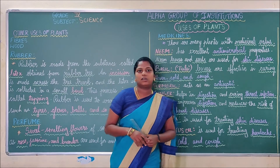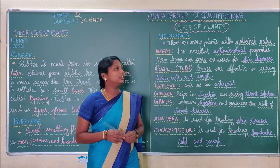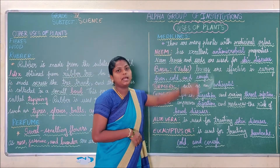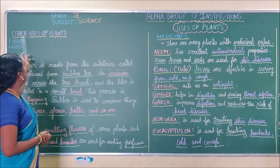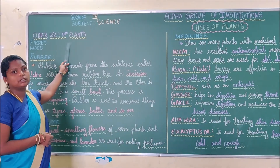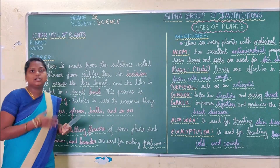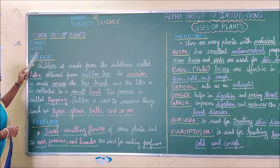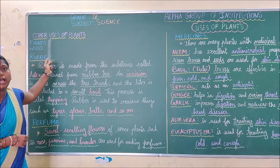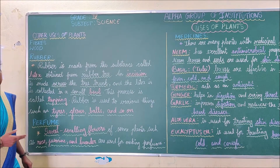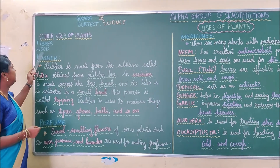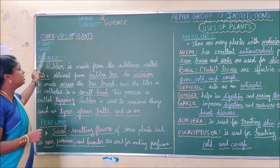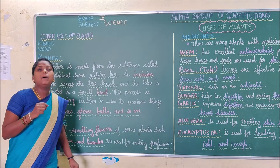Good morning, my dear children. Today we will continue lesson number 2, Uses of Plants. In the previous class we learnt about other uses of plants. There are some other uses of plants besides food. Last topic was fibers and wood. Cotton and nylon are the two types of fibers used to make clothes. There are two types of wood: hardwood and softwood, used to make furniture and other products.